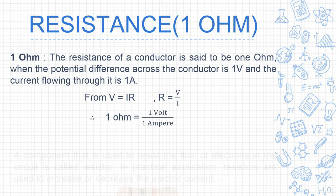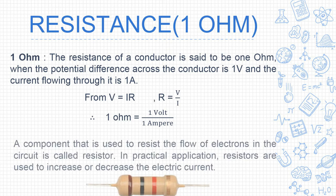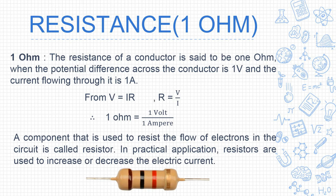We say a resistance is 1 ohm when the potential difference across the conductor is 1 volt and the current flowing is 1 ampere. From Ohm's law, R = V/I, so the unit of resistance is ohm, where V is in volts and I is in amperes. A component used to resist the flow of electrons in a circuit is called a resistor.